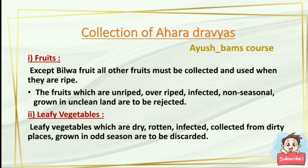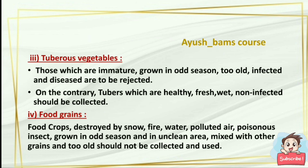Leafy vegetables that are dry, rotten, infected, collected from dirty places, or grown in odd seasons should be discarded; only fresh and clean leafy vegetables should be used. Tuberous vegetables that are immature, grown in odd seasons, too old, infected, or diseased are to be rejected; tubers which are healthy, fresh, wet, and non-infected should be collected and used. Food crops destroyed by snow, fire, water, polluted air, or poisonous insects, grown in odd seasons or unclean areas, mixed with other grains, or too old should not be collected and used.